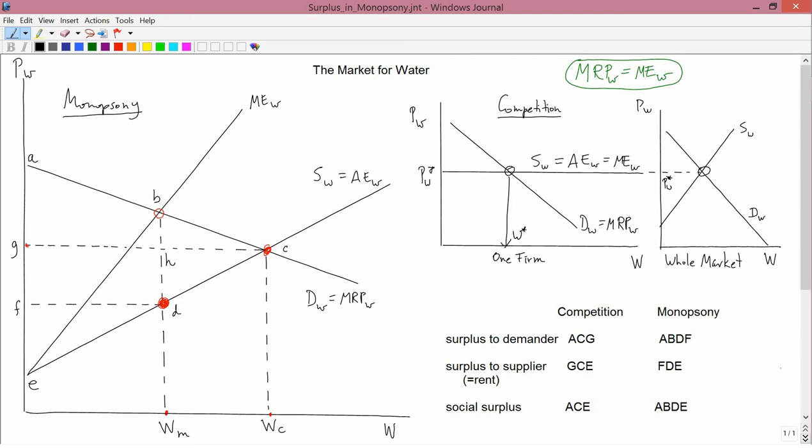Surplus to the demander, surplus to the supplier, and social surplus. I'm going to use the graph on the left to derive the table in the bottom right.